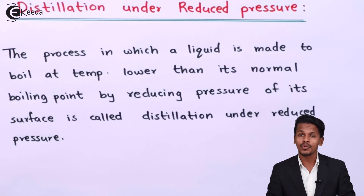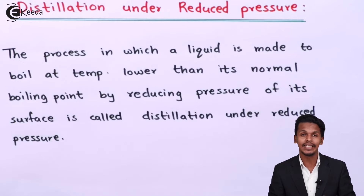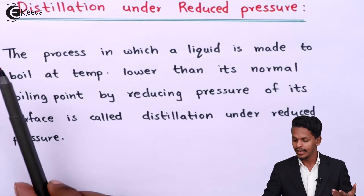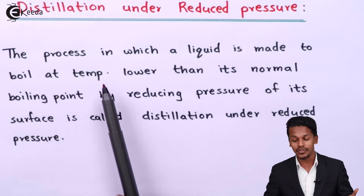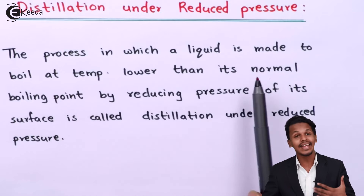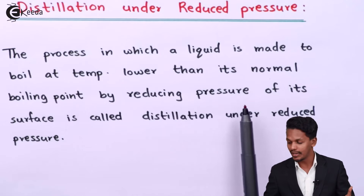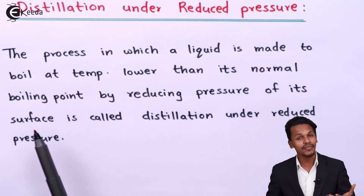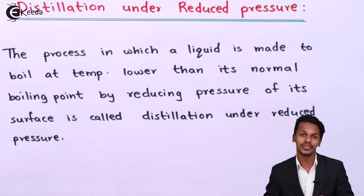Before understanding the procedure or the principle behind it, let us understand the definition: distillation under reduced pressure is the process in which a liquid is made to boil at a temperature lower than its normal boiling point by reducing the pressure on its surface.